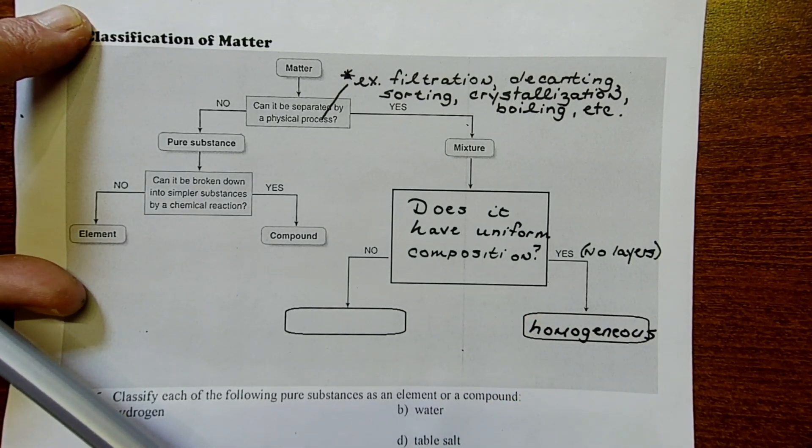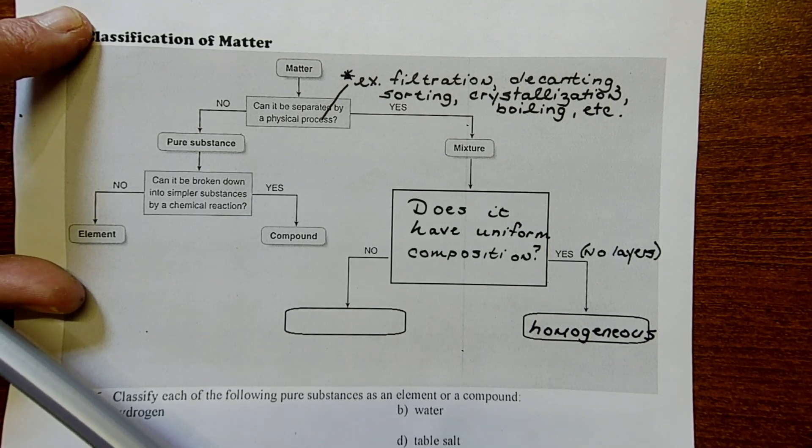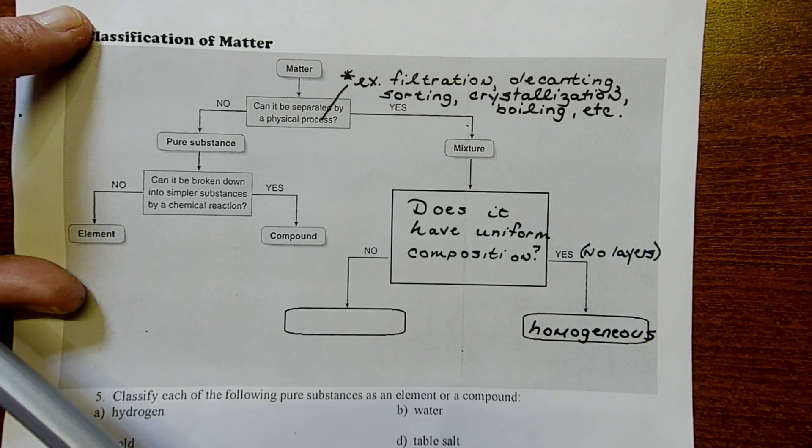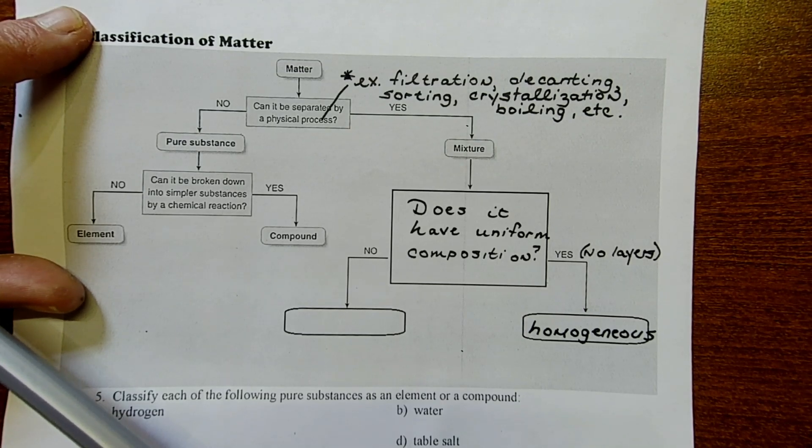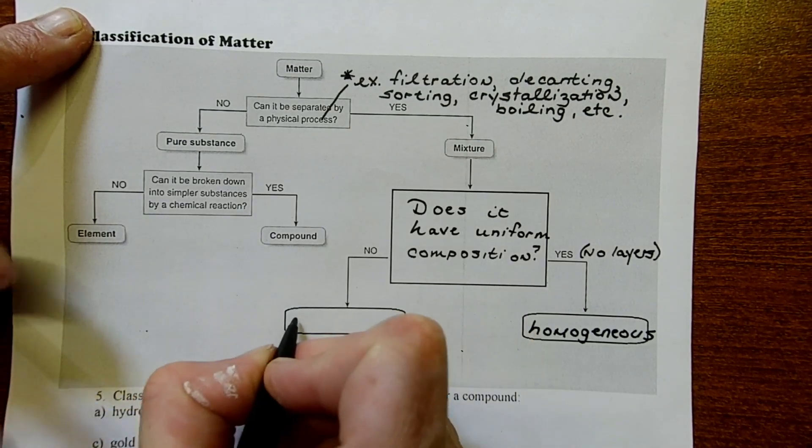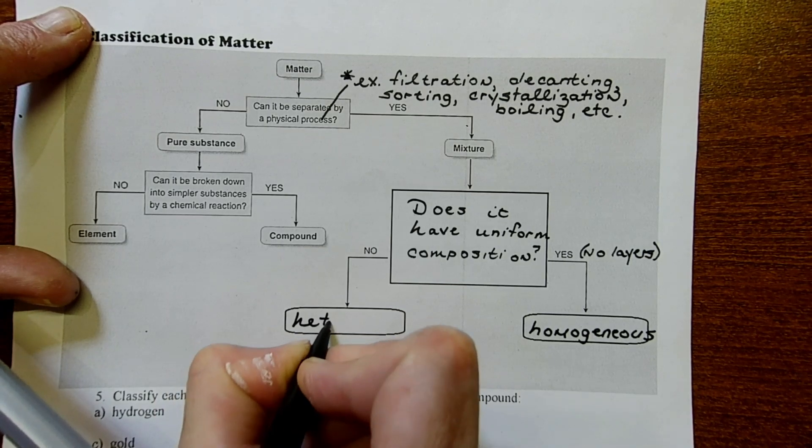If the answer is no, we see some layers or we see different things floating around. If it has different states, so a glass of ice water doesn't have uniform composition because the ice floats to the top. Then we're dealing with a heterogeneous mixture.